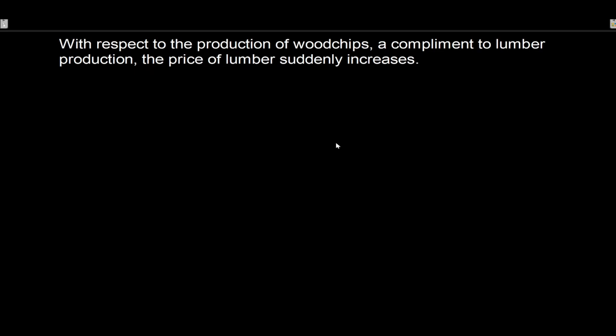Next example: with respect to the production of wood chips, a complement to lumber production, the price of lumber suddenly increases. Key words jumping out at me: production of wood chips, complement, production. All of this is screaming supply. We're talking about supply here. We also have two goods: wood chips and lumber. The price of lumber increases, but are we interested in the lumber market? No - we're interested in the production of wood chips.